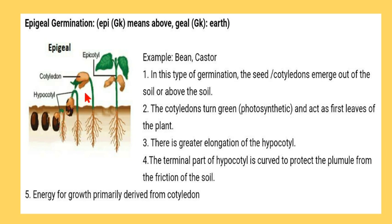The terminal portion of the hypocotyl curves inward, which protects the plumule from the friction of the soil. Then the cotyledons turn green, become photosynthetic, and act as the first leaves of the plant. The testa dries up and falls to the ground. Energy for growth is basically derived from the cotyledons.